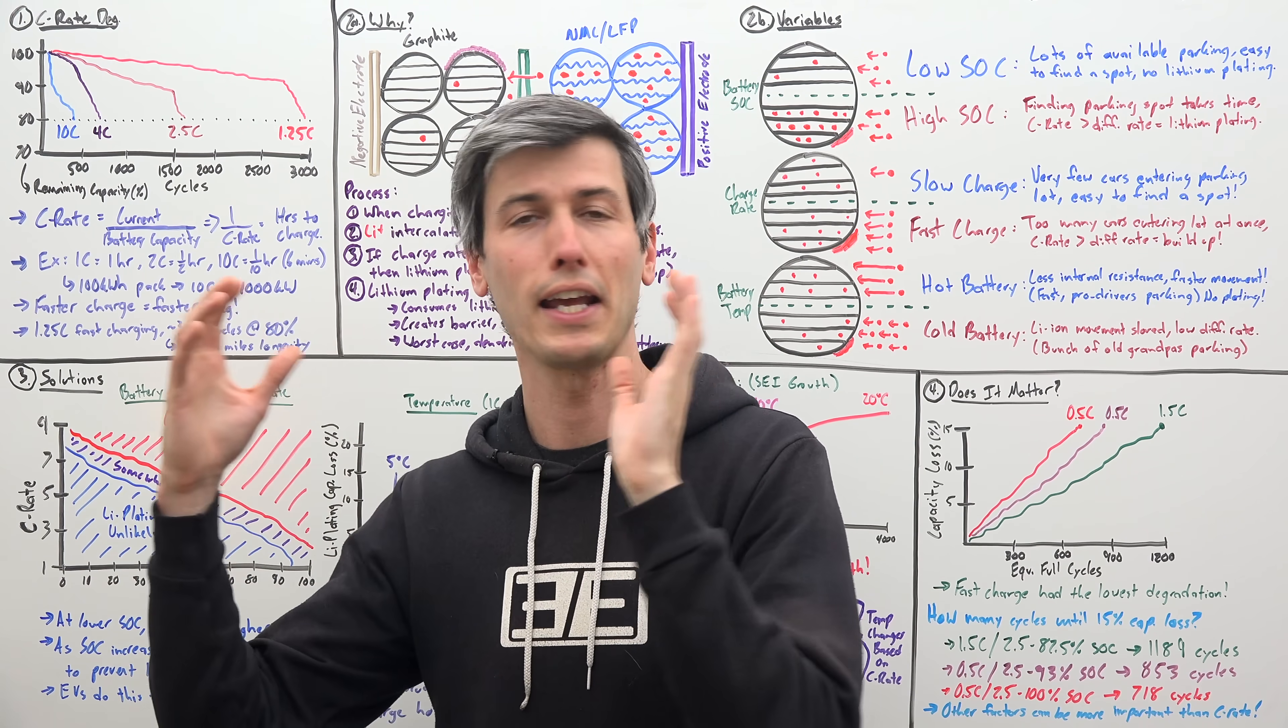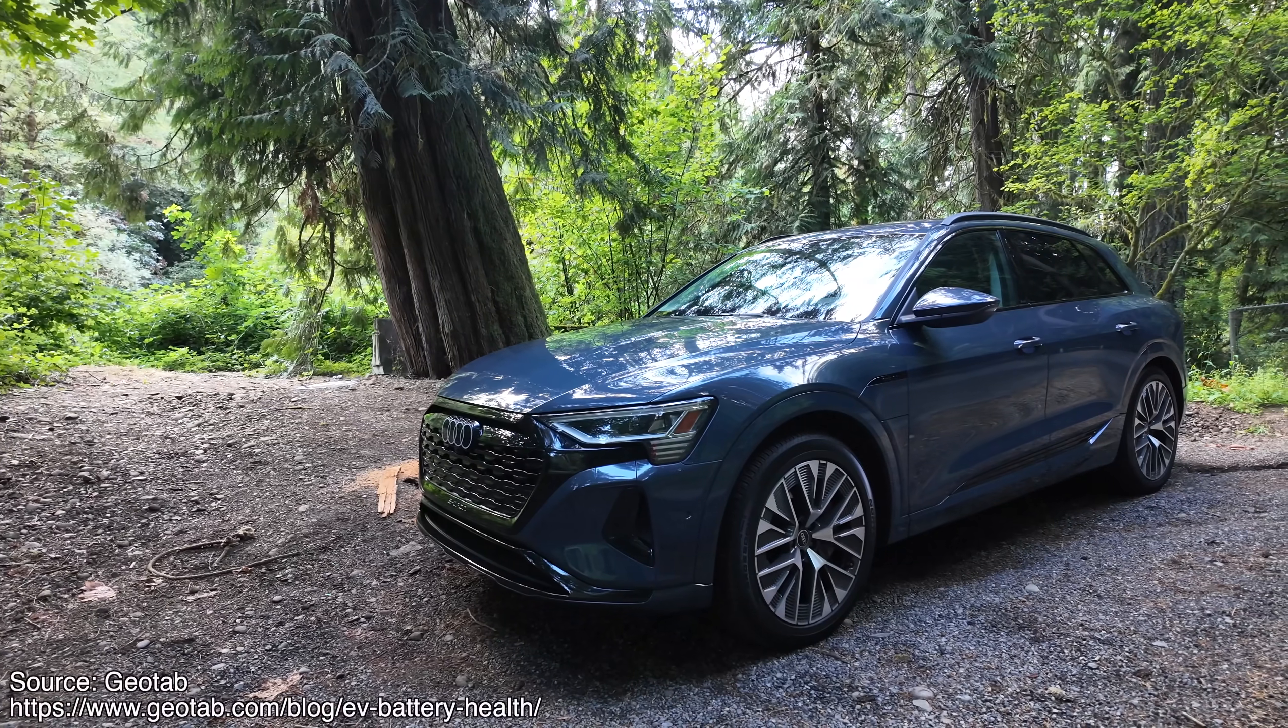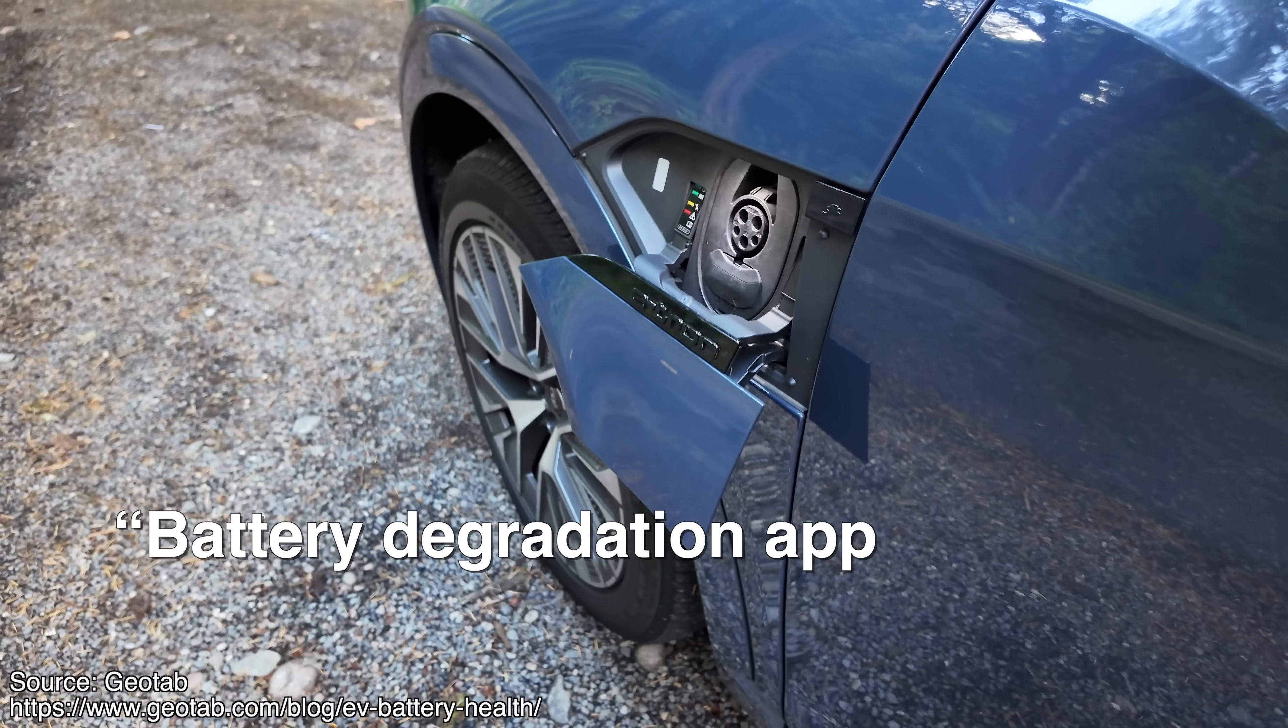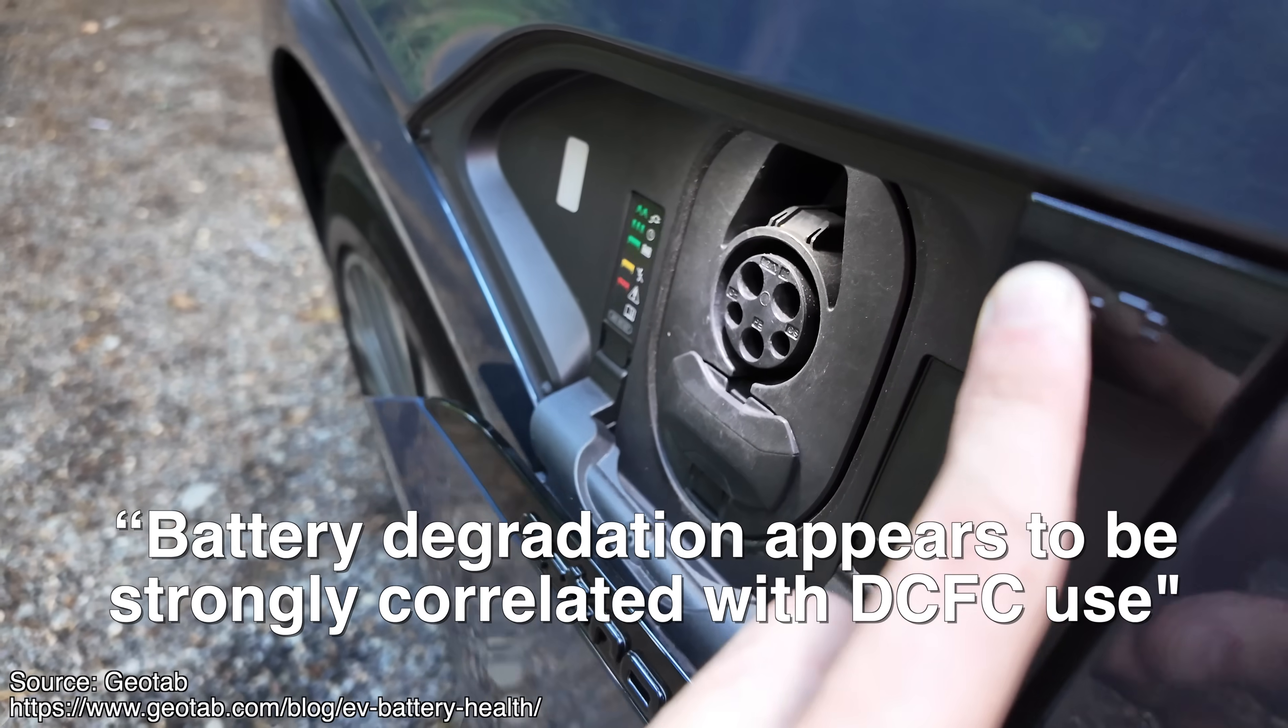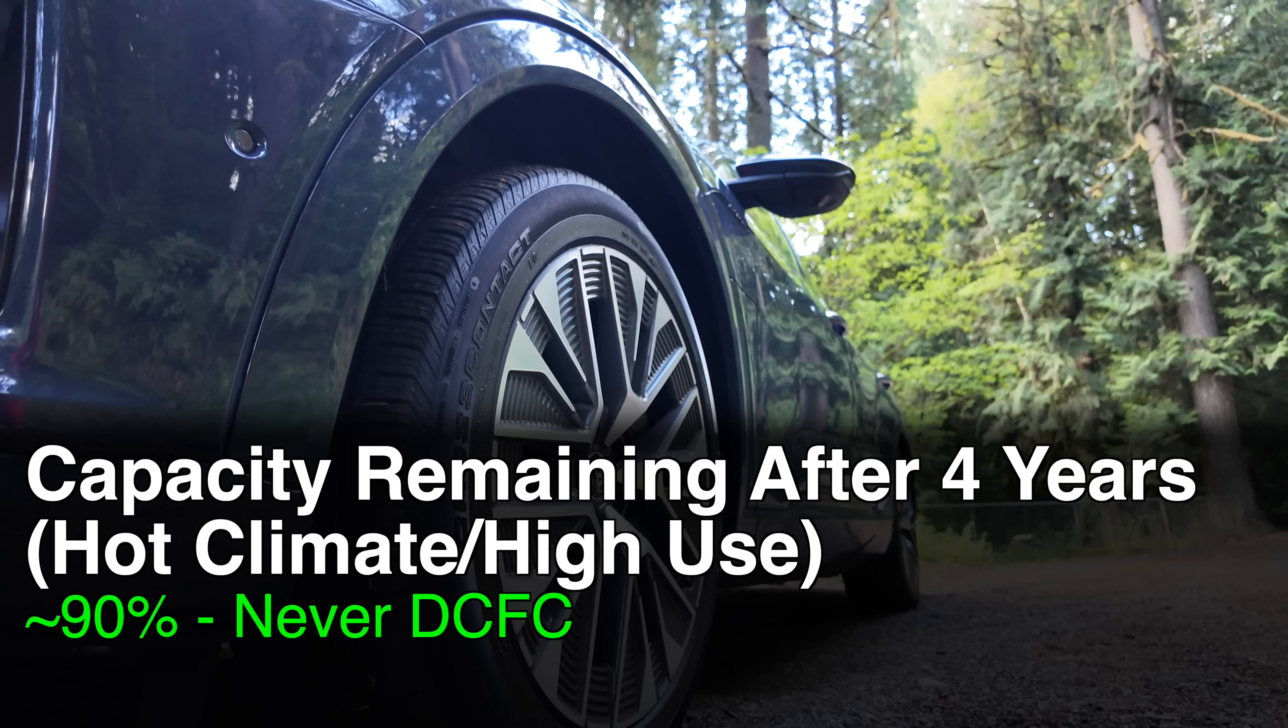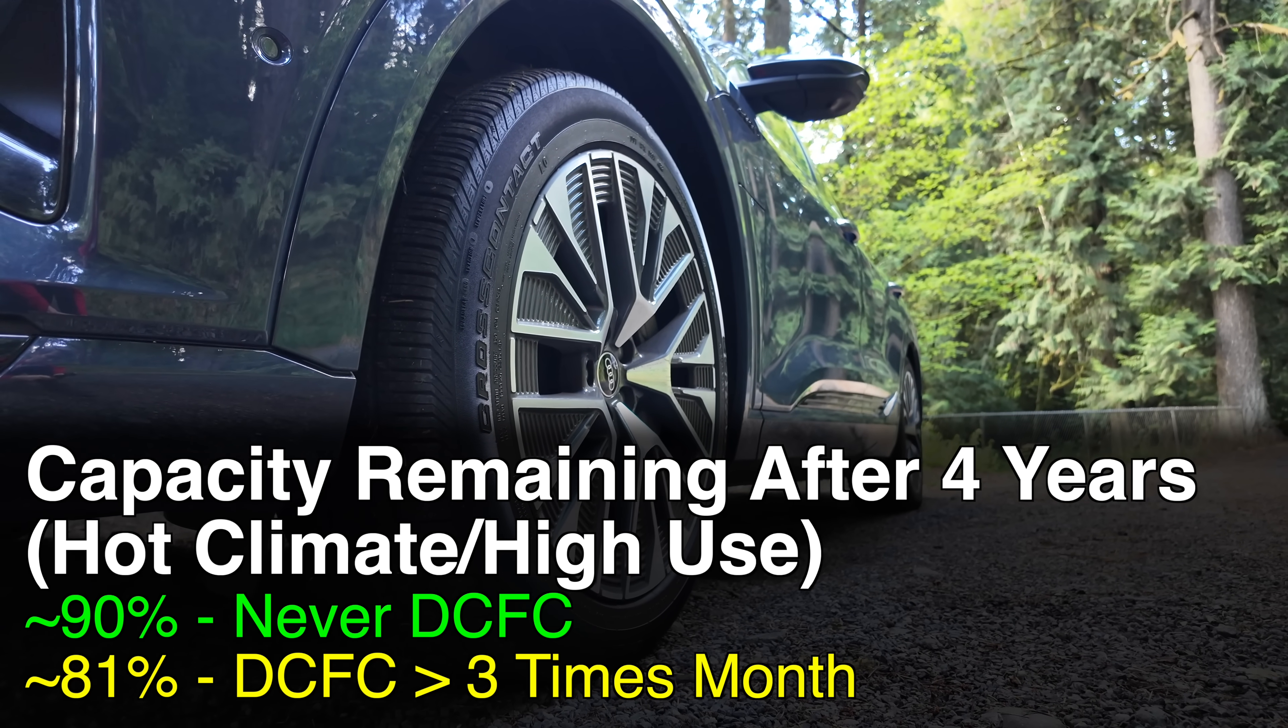Finally, a company, Geotab, claims to have data from 10,000 electric vehicles. And they claimed that battery degradation appears to be strongly correlated with DC fast charging for high use vehicles in hot climates. With about 90% capacity remaining after four years versus a little over 80% after four years with frequent fast charging. Now, this also sounds pretty concerning, but it also seems like this data was based on a single electric vehicle make, which is known for having a really high charging rate.